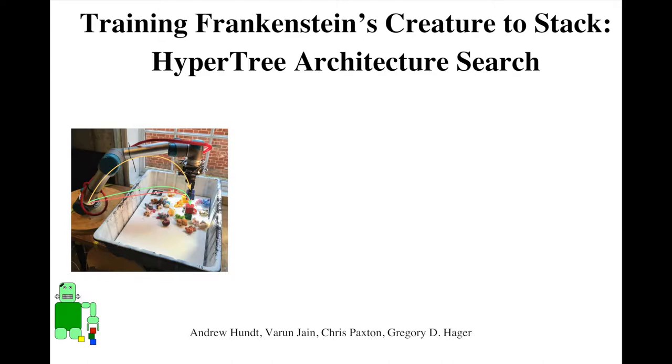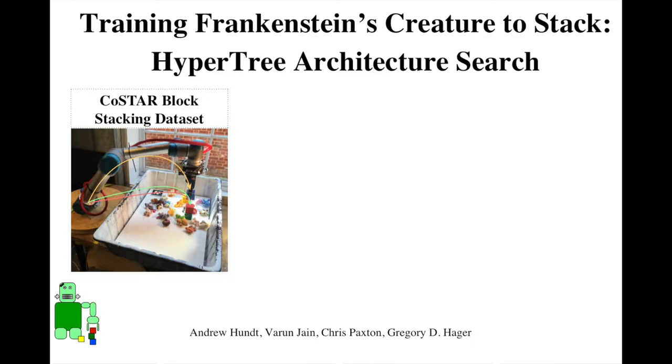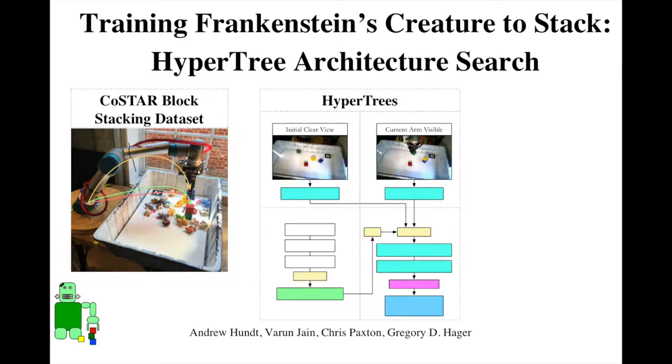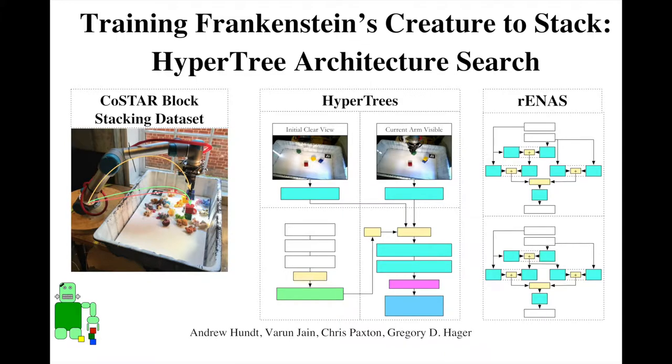Designing deep learning architectures for robotics is complicated, and we aim to simplify it in three main ways. First, we've created a publicly available block stacking dataset for the benchmarking of neural networks. Second, a generalized metamodel called HyperTrees. And third, an adaptation of a recent architecture search technique.